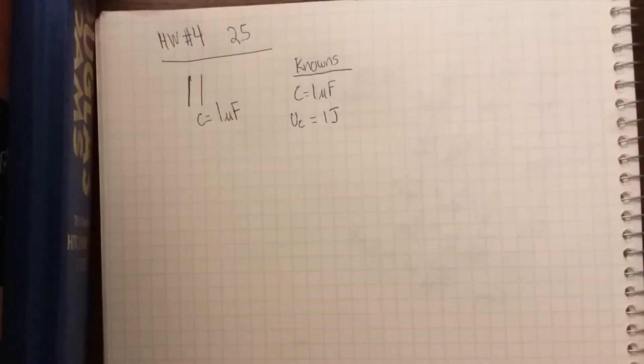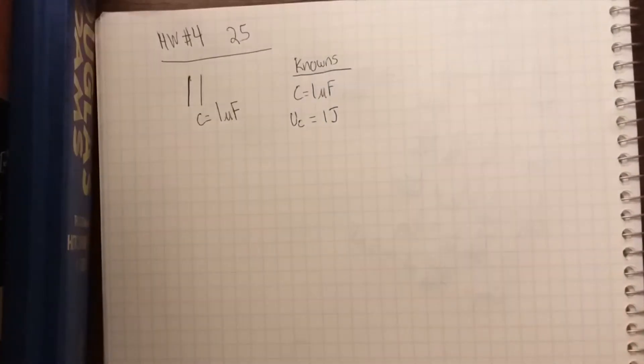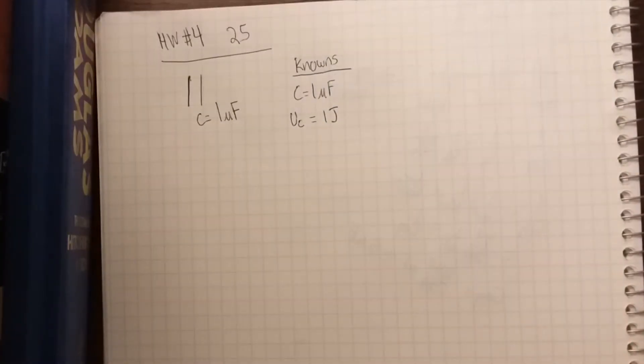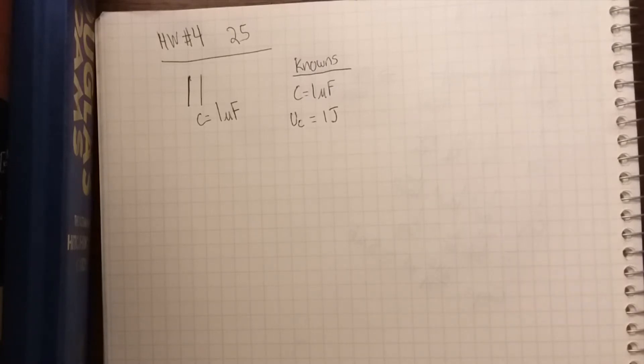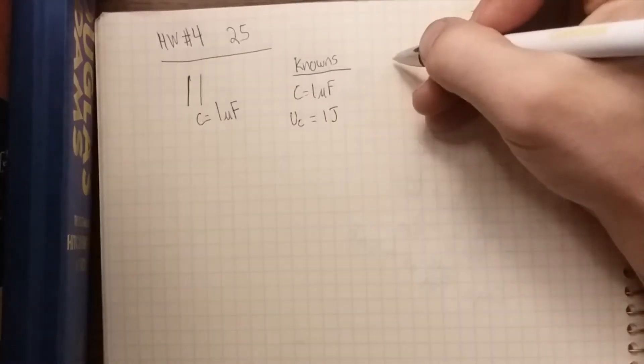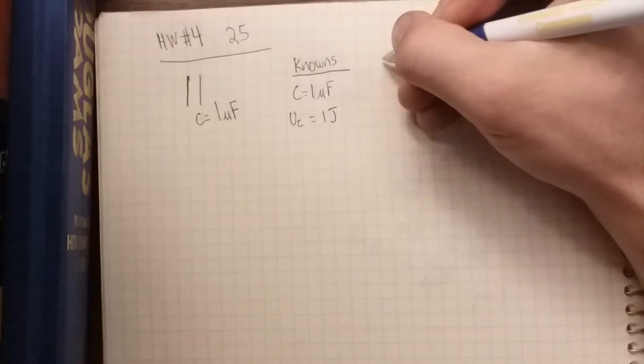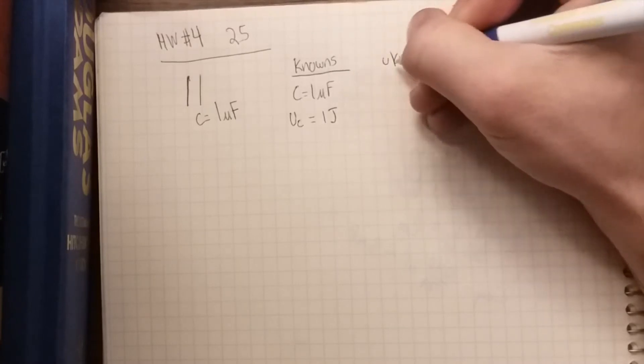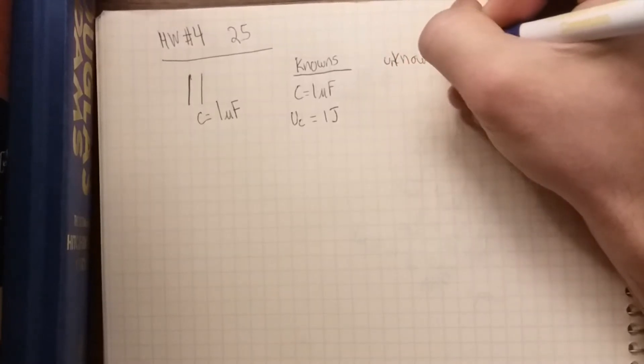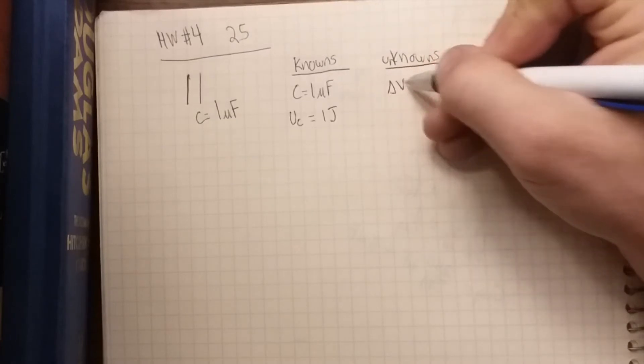So there are many different equations that relate capacitance, energy, voltage, and these different quantities. What we need to do is find ones that have C and UC but also deal with our key unknown. In this case, our unknown is the voltage difference.